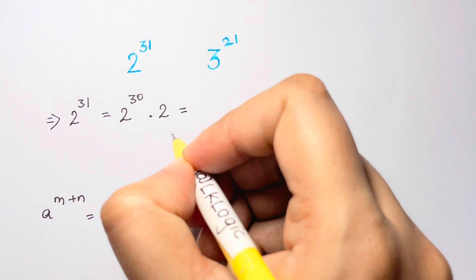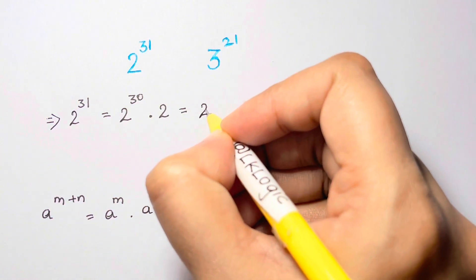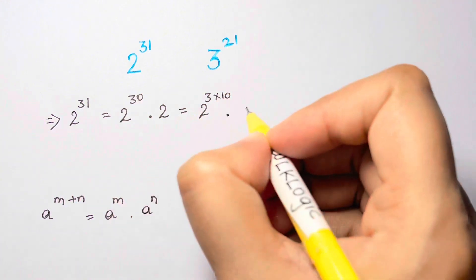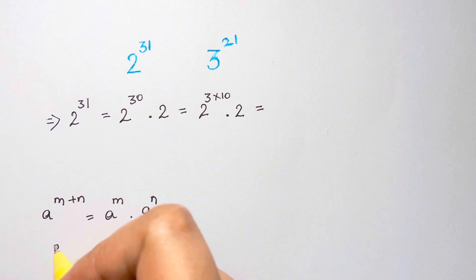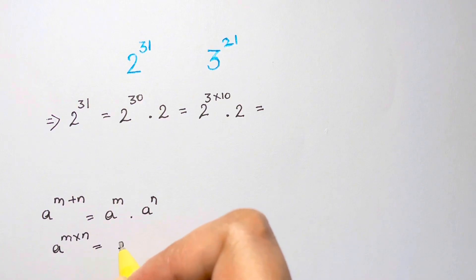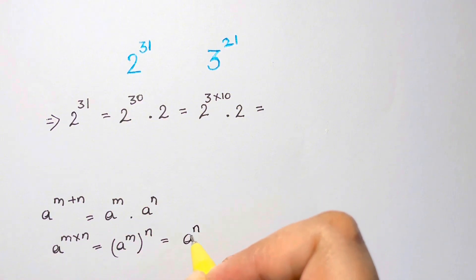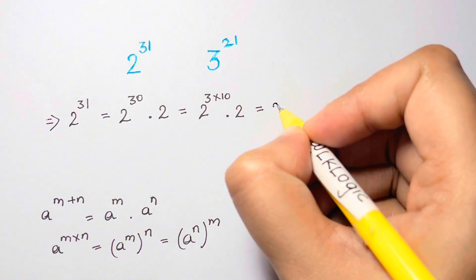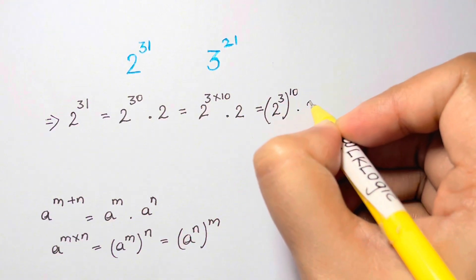Now, 2 to the power of 30 can be split into 2 to the power of 3 times 10, then we have times 2. You should know this law as well: a to the power of m times n can be written as a to the power of m, whole to the power of n, or a to the power of n, whole to the power of m.